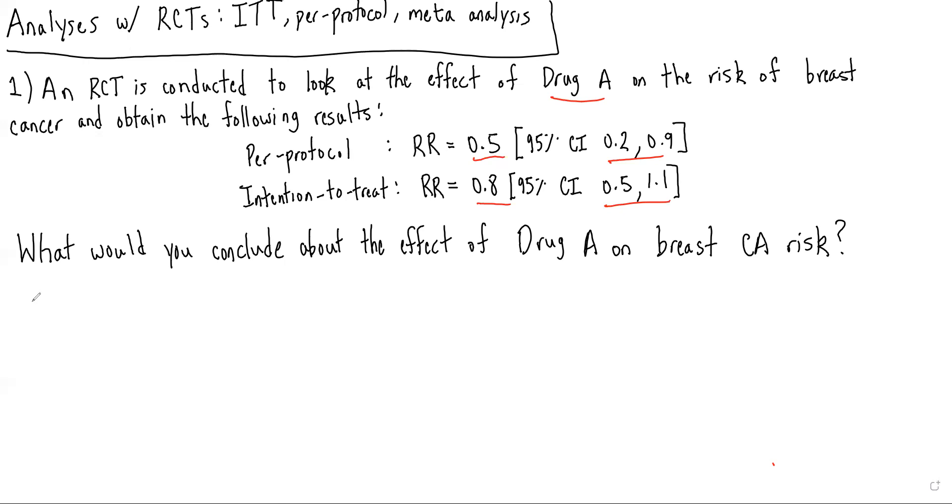In this case, we're looking at a risk ratio, and we remember that the null hypothesis for relative measures, such as a risk ratio, is that the risk ratio is one, that there's no difference between the two groups.